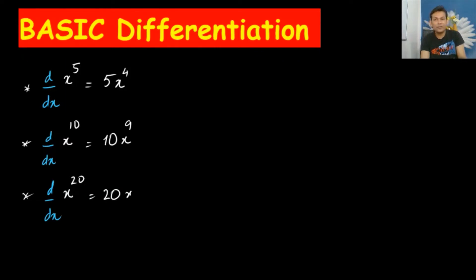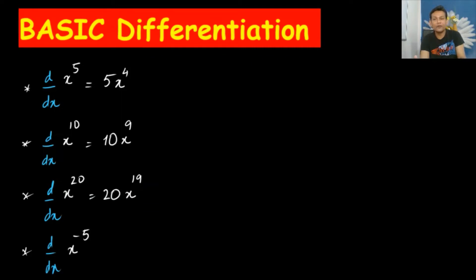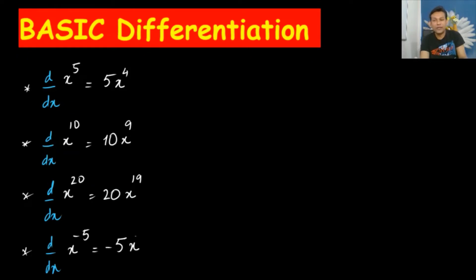The power reduces by 1, so it becomes 19. One more thing: an example with a negative sign — x to the power minus 5. Be careful, because what we do with the power is reduce it by 1. So minus 5 minus 1 is minus 6. That's the result: minus 5x to the power minus 6.